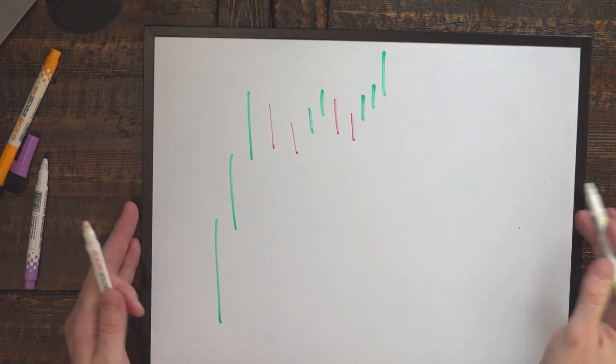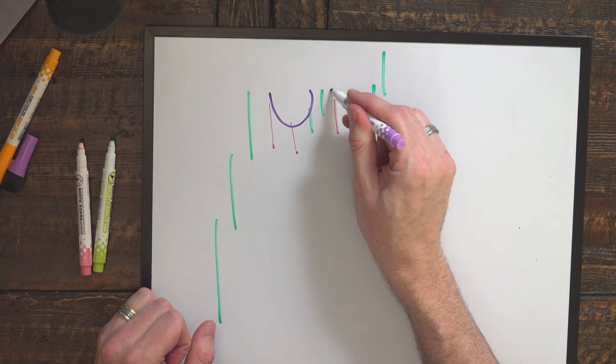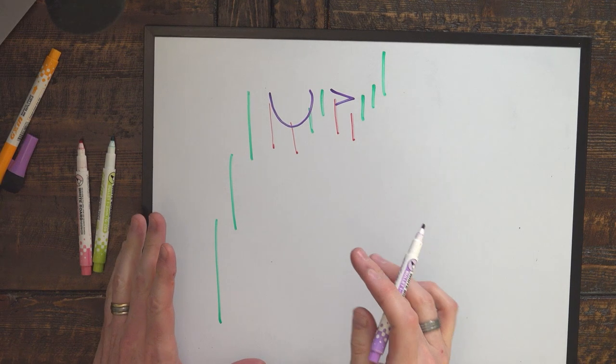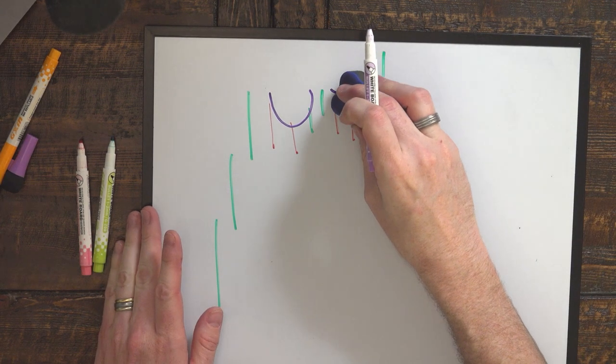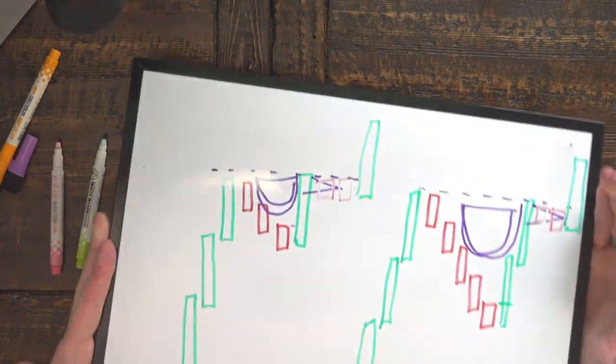I suppose it's possible that sometimes an ABCD pattern could look a little bit like a cup and handle, but that's not as common. A proper ABCD pattern pulls back much longer on this side than what your typical handle formation is.